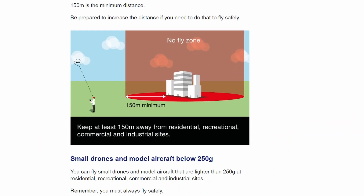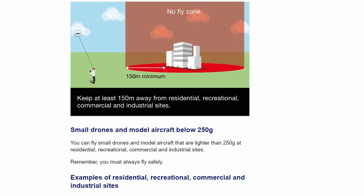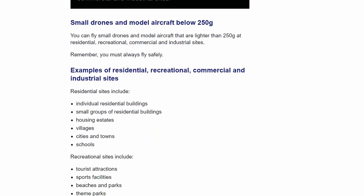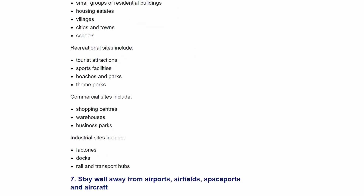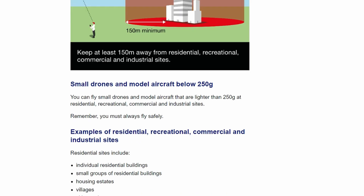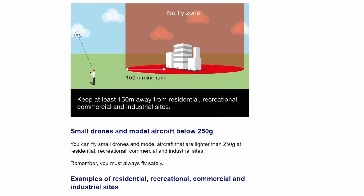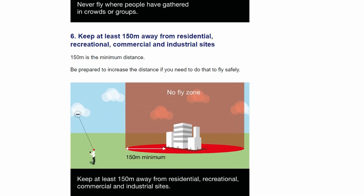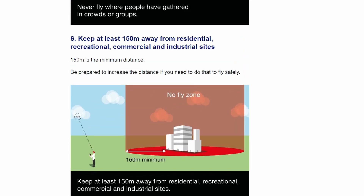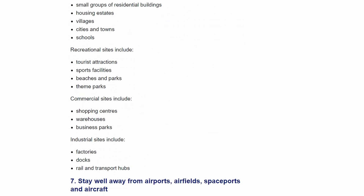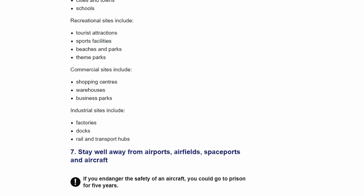with a drone over 250 grams without any certification such as the A2 CFC. It changes the understanding in terms of keeping 150 meters away from residential, recreational areas, etc., to include an individual residential building. So no longer a classification of congested area — just one residential building means you have to keep 150 meters away.